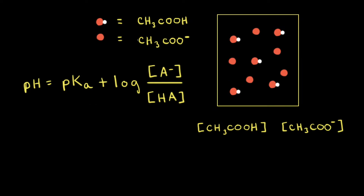Let's use the Henderson-Hasselbalch equation to calculate the pH of an aqueous buffer solution that consists of acetic acid and its conjugate base, the acetate anion. Let's use this particulate diagram to help us calculate the pH of the buffer solution. Remember that the goal of a particulate diagram is not to represent every particle in the solution, but to give us an idea about what's going on in the entire solution. Also, when looking at the particulate diagrams of buffer solutions, water molecules and cations are often left out for clarity.